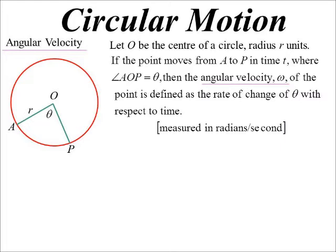So omega we often use for the symbol for angular velocity. So it's the rate of change of theta, the angle at the centre of the circle, with respect to time. And as we've seen, when we're dealing with calculus and angles, it's radians is the standard unit that we use.